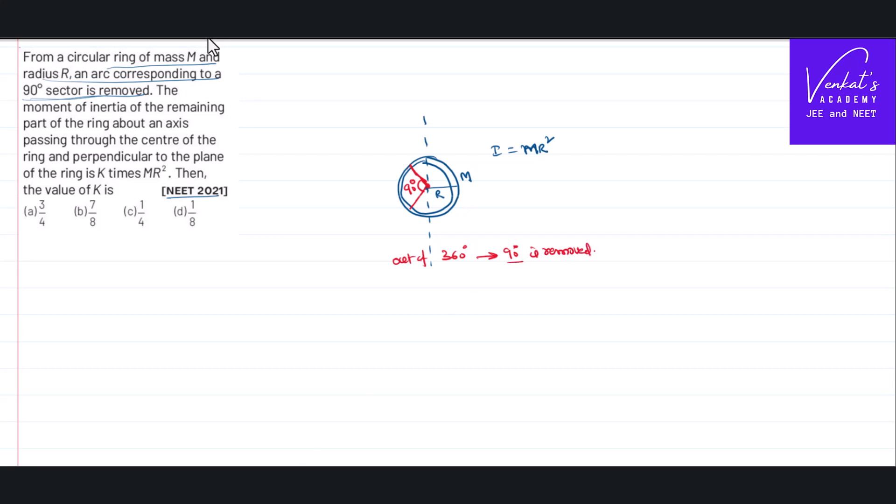That means 90 into 4 is 360. Correspondingly we can say mass M by 4 is removed.